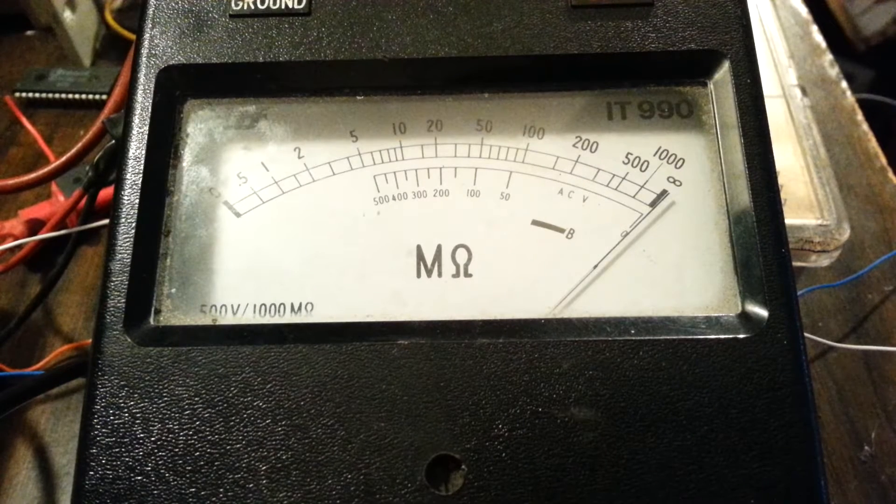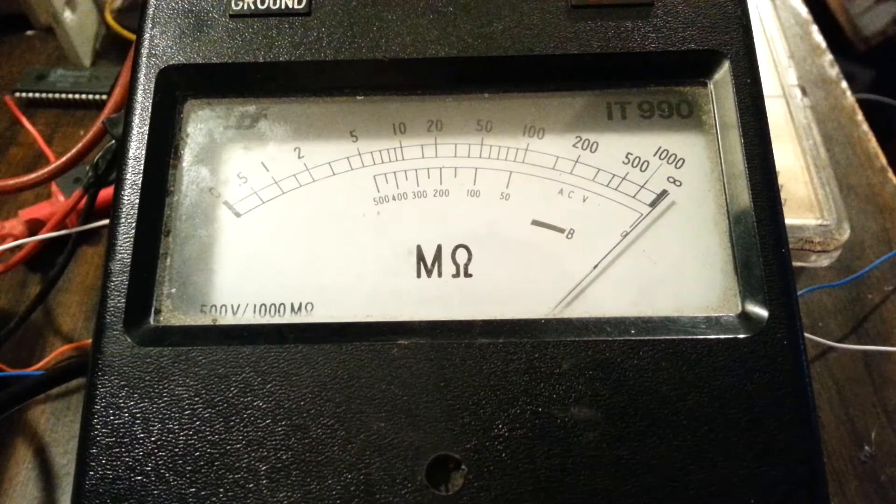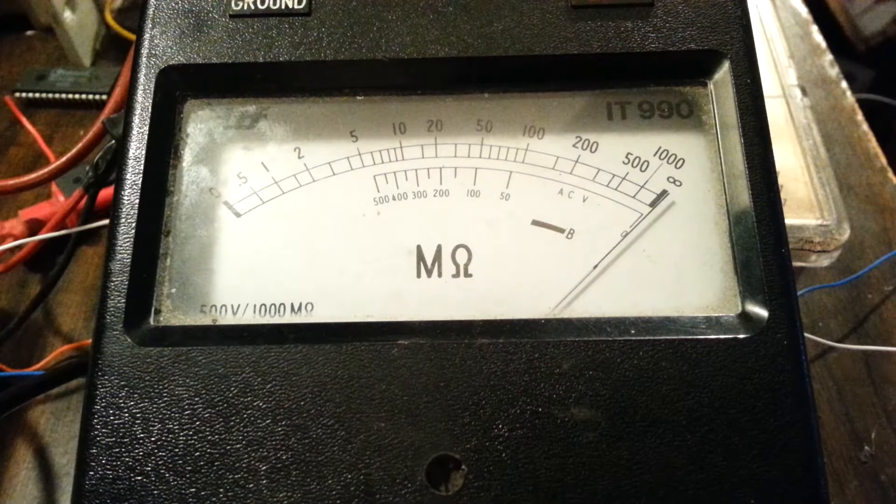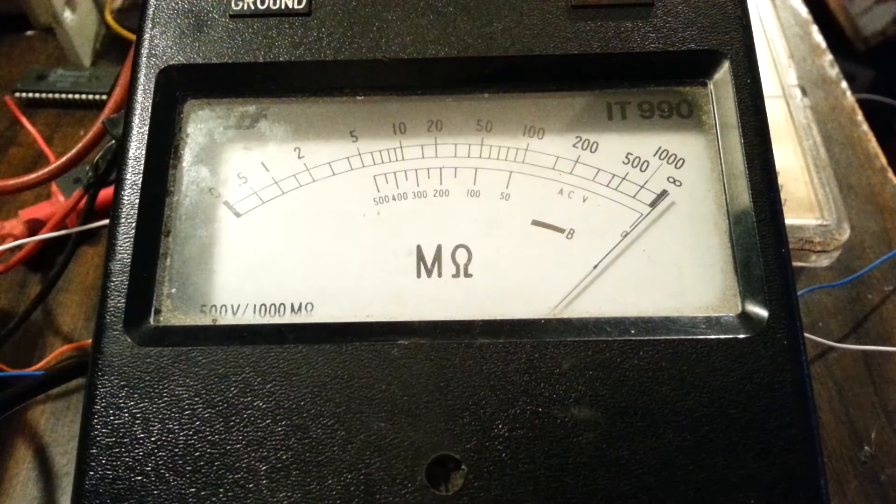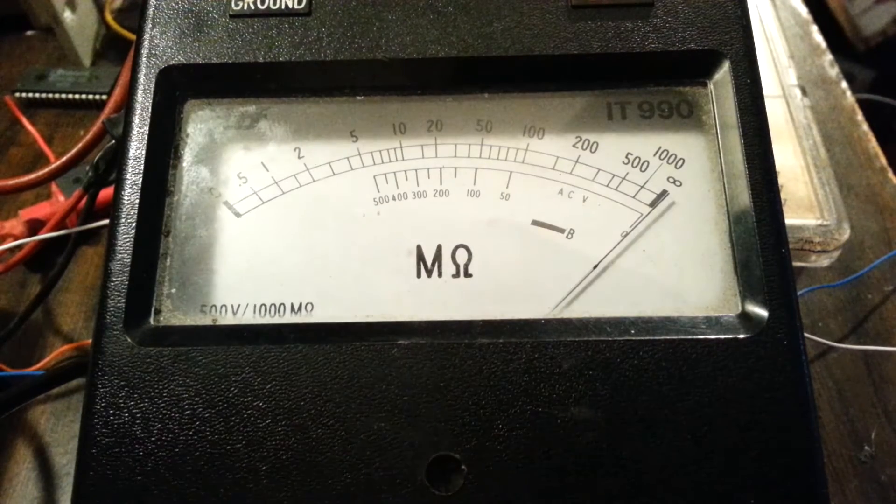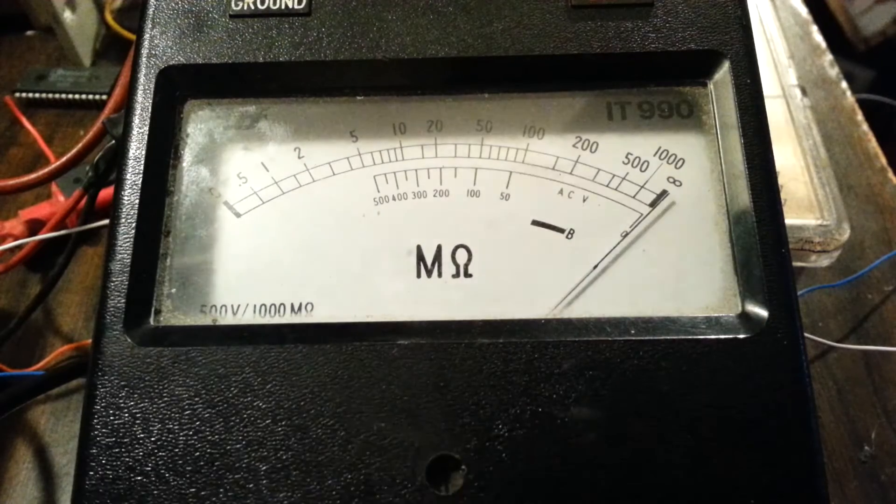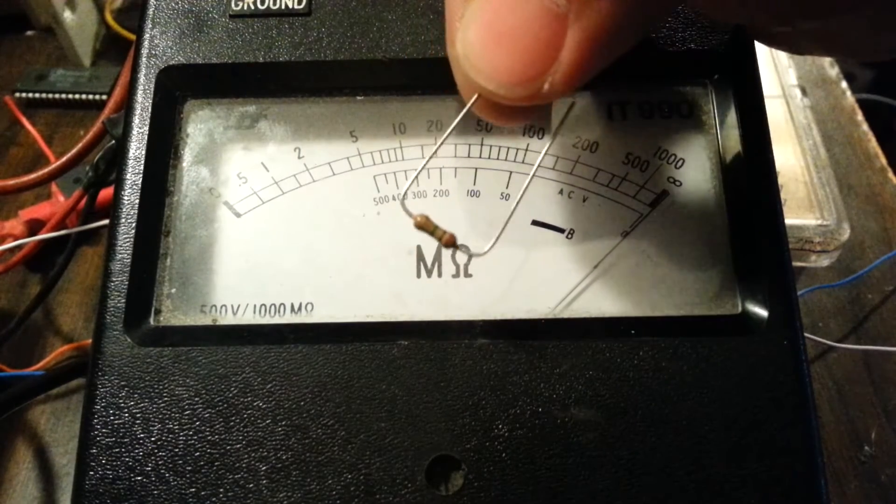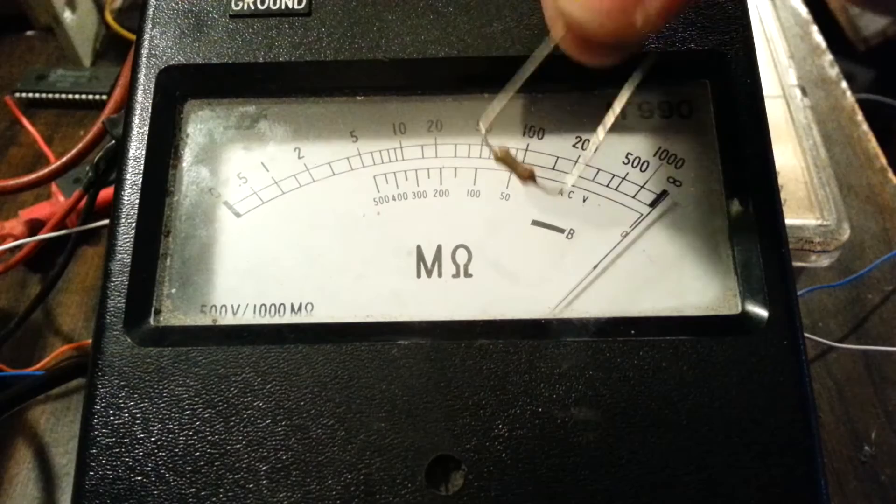There's some special high value resistors we're going to be checking. Of course you have standard values like 1 mega ohm, which is pretty common. Whose color code is the humble brown, black, green.